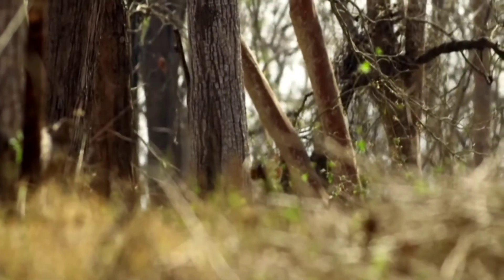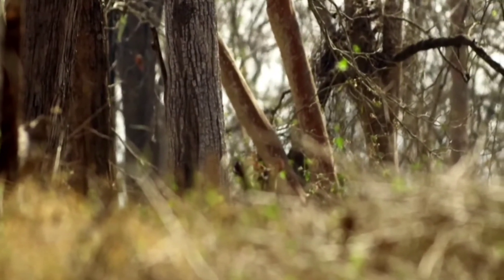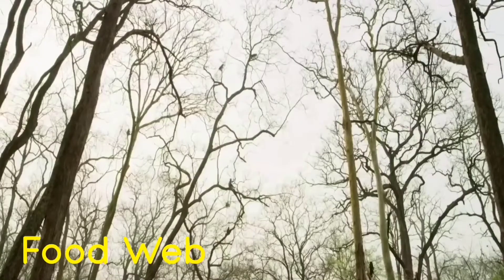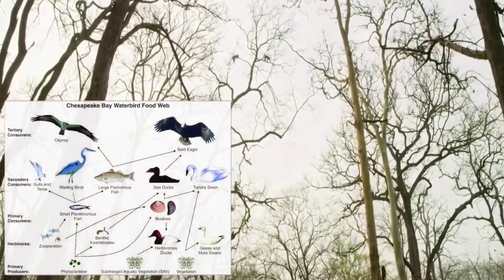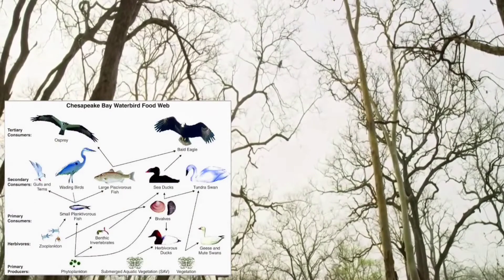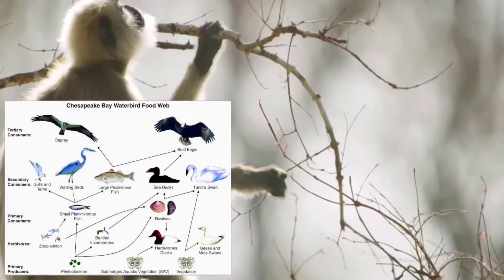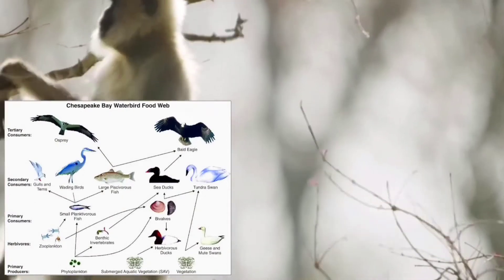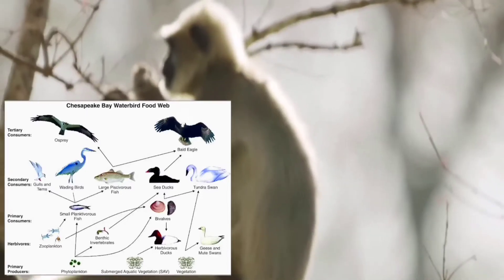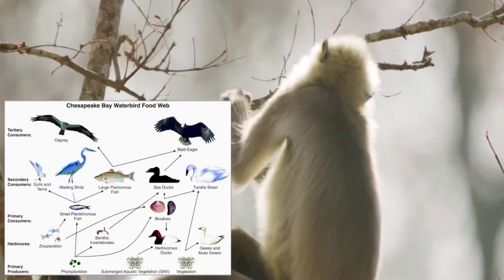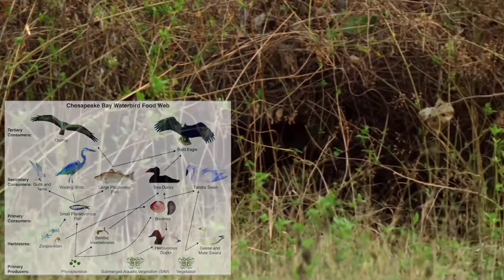Natural ecosystems usually have more complicated food chains. However, a network of interconnected food chains is called a food web. Arrows are used to show which direction the energy flows and help keep track of the connections between organisms. Now that you understand a little bit more about food chains, let's see if you can find the connections between living things around you.